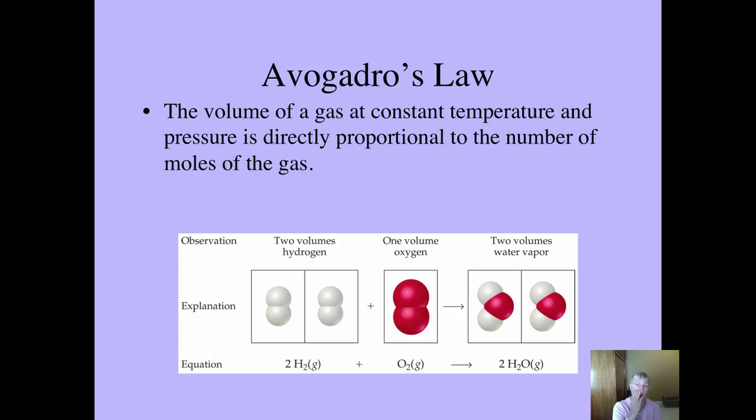So Avogadro said that the volume of a gas, as long as the pressure is constant and the temperature is constant, the volume of a gas is directly proportional to the number of moles of the gas. Well, that makes sense. The greater the number of moles of something you have, the more space it is that it's going to take up, as long as you keep the temperature and pressure constant as you're comparing one gas to another.